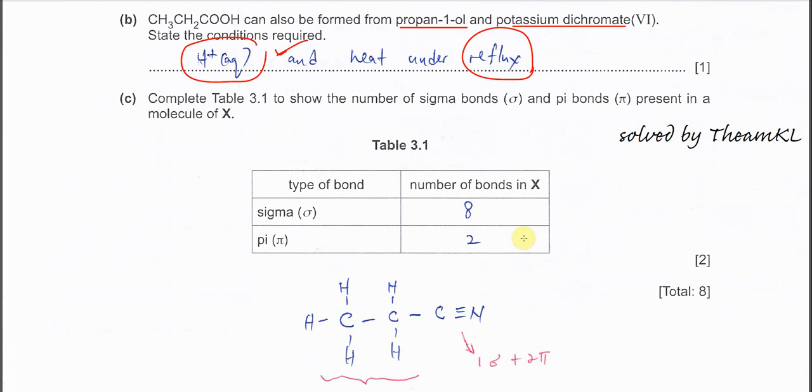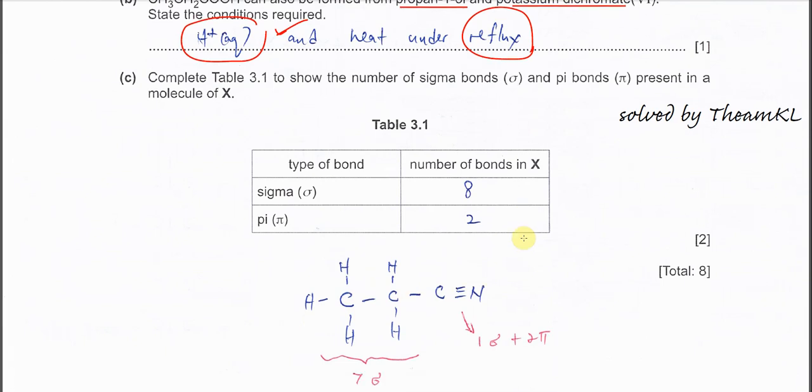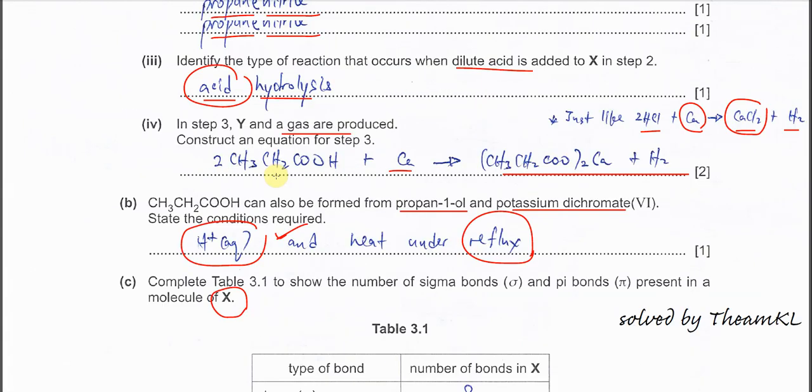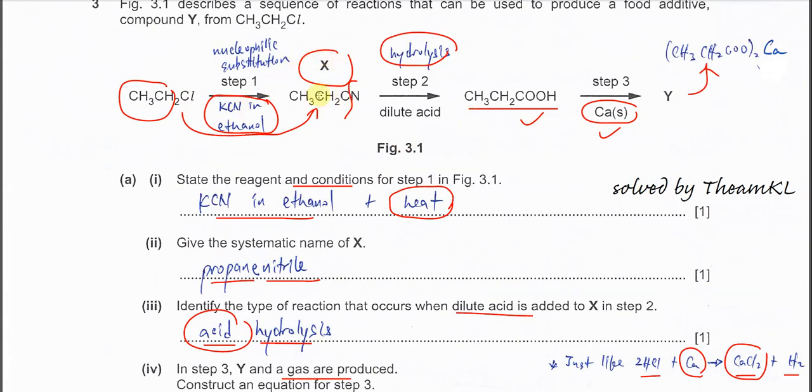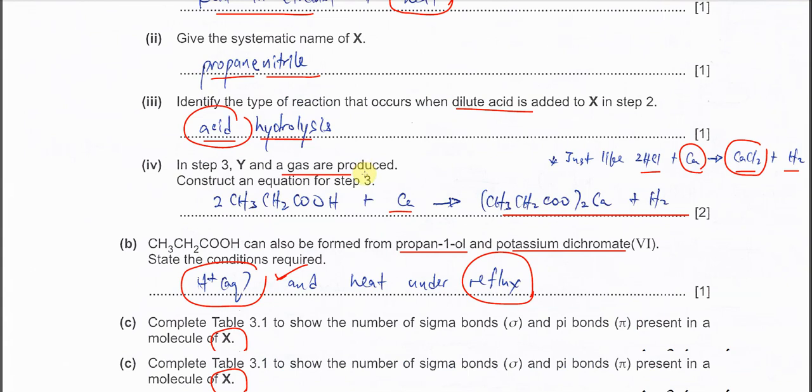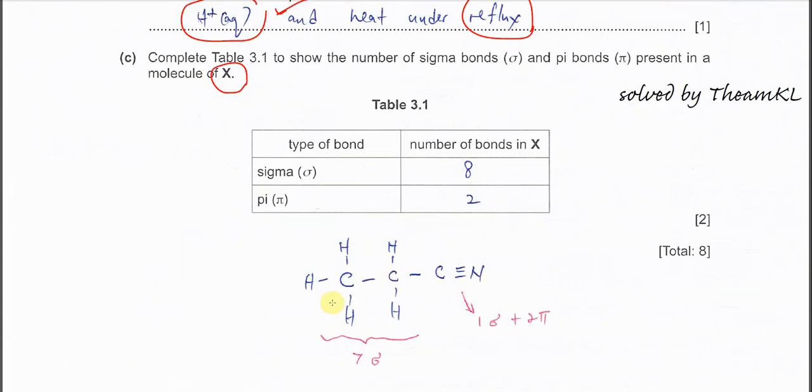Part C. This one is better you know how the bondings or how the structures looks like for this propane nitrile. A molecule X again is the propane nitrile. So if possible, you just draw the structure out. If you are quite sure how it looks like, then no need.